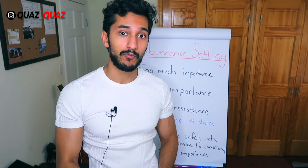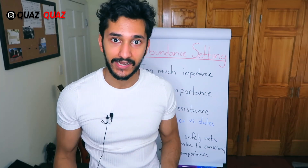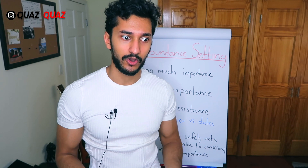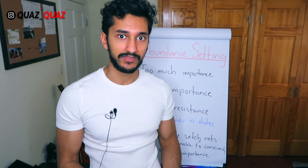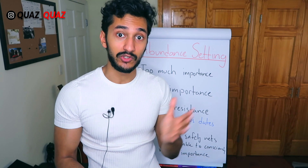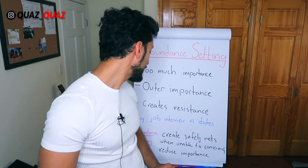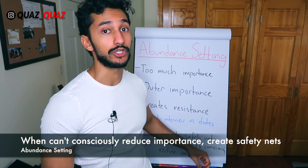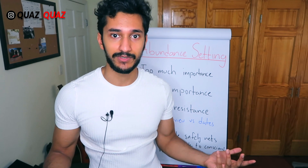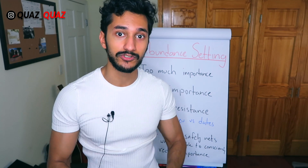Now that we know too much importance creates actual resistance, we want to know how to surrender and let go. This process is very difficult for a lot of people. It can be hard to understand how you can intend but let go at the same time. We're going to dive deep into how you can create abundance in your life so that you never have to feel attached to any one thing. This process of abundance setting is only for when you're unable to consciously reduce your own importance. If you can just tell yourself this isn't too important to me and truly feel it, then nothing else needs to be done — you've reduced importance and you shall get to your goal.